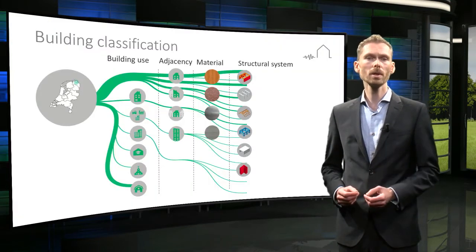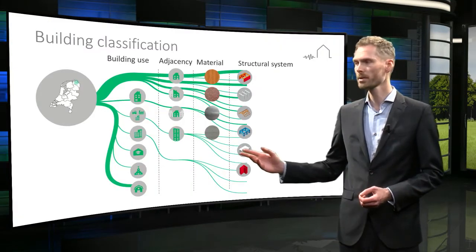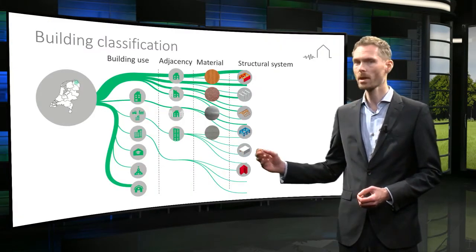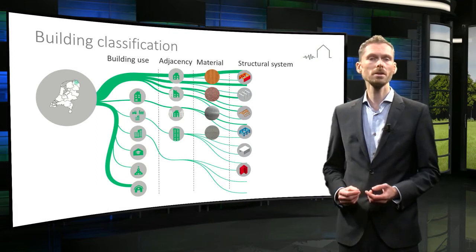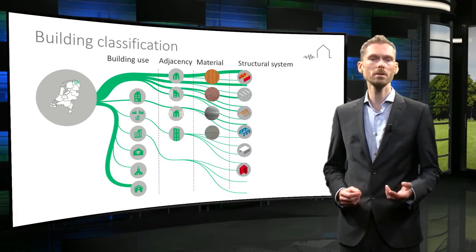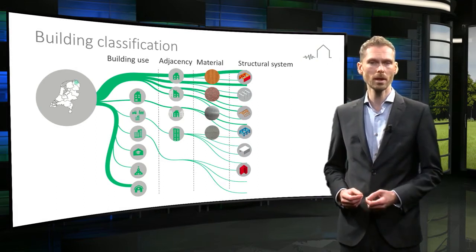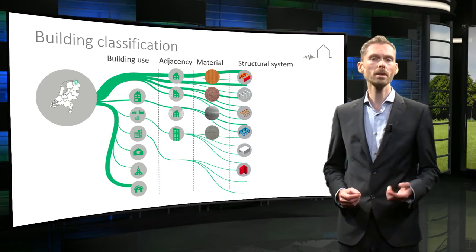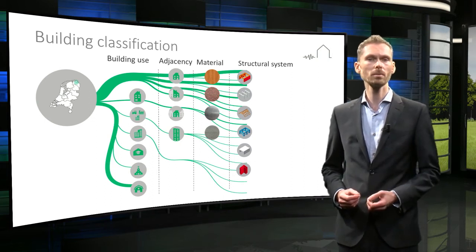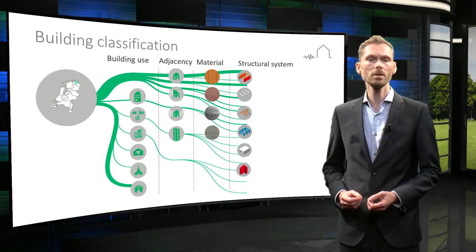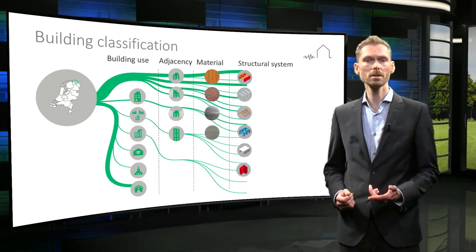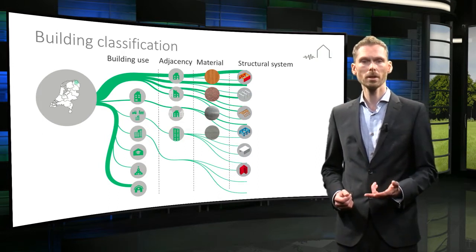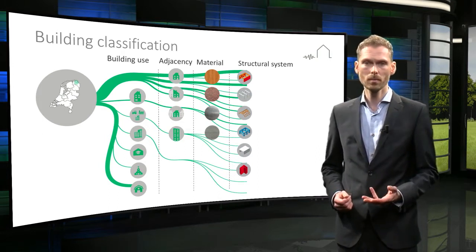To divide the building stock into typologies, a classification system can be used. Such a system groups together buildings with expected similar structural behavior. This grouping is done based on the combination of similar features such as building use, adjacency, material, and structural system.